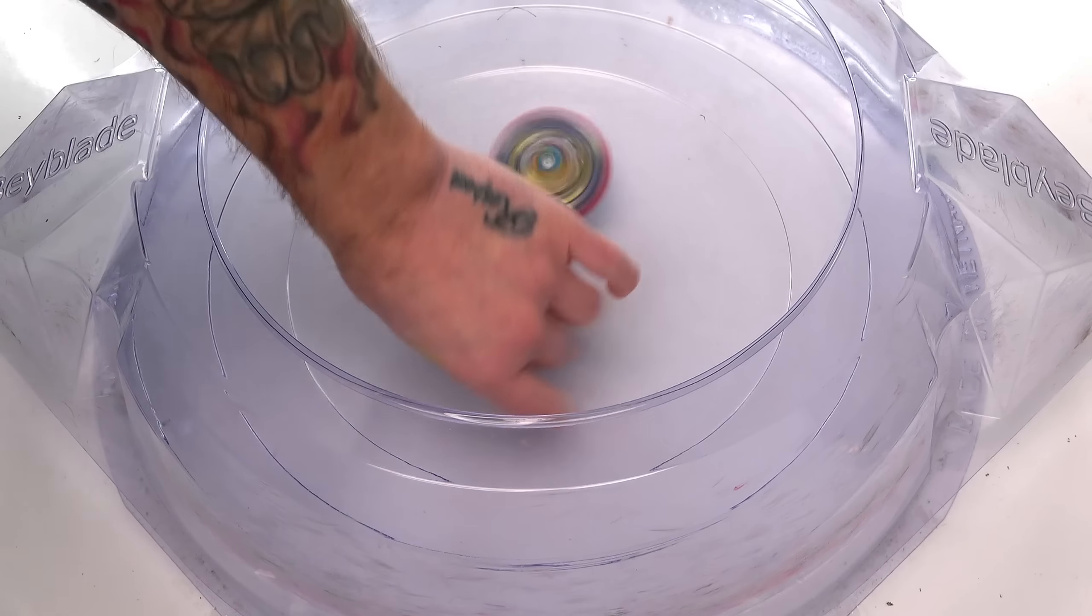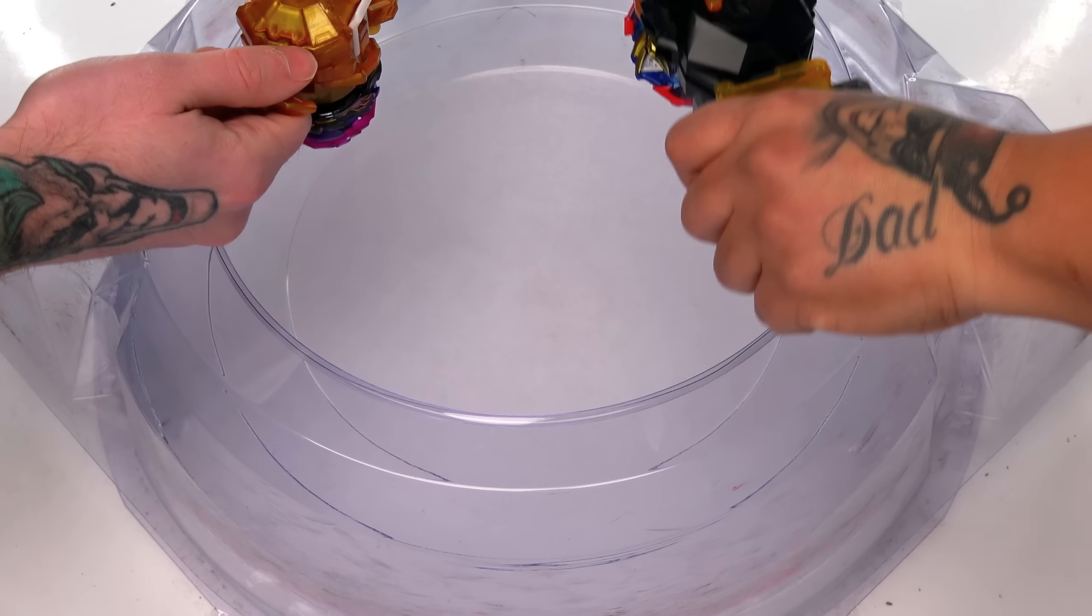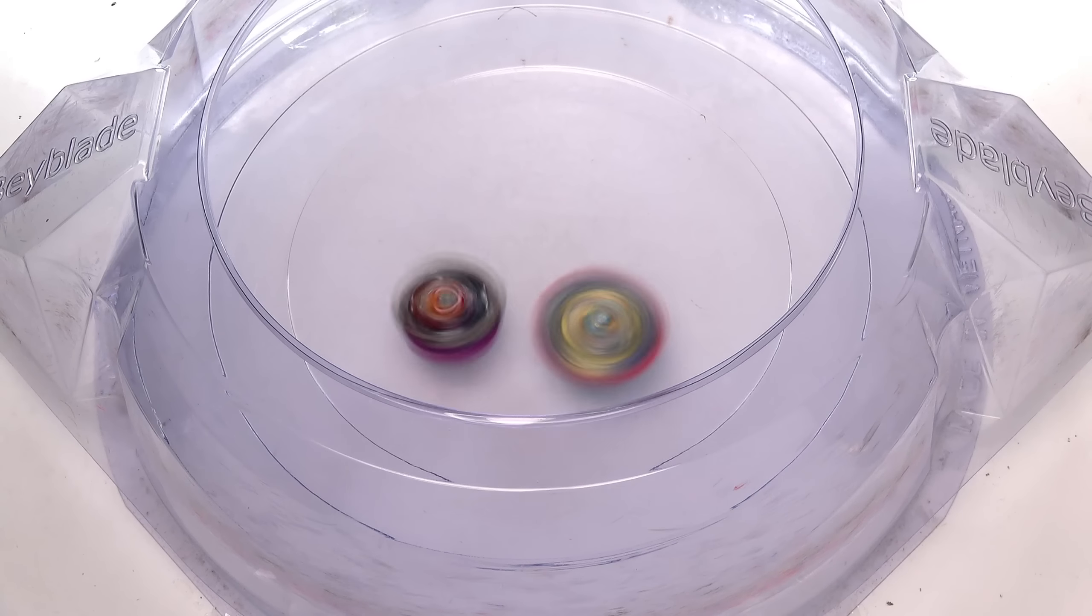All right guys, very very well done to these beyblades not bursting so far. It's only actually been the single layer, the first evolution has had to be burst. We haven't seen no other burst so far, but I have a feeling that is about to go. Because, yo, it slows down and then it hits out exactly what it done to the first God Valkyrie.